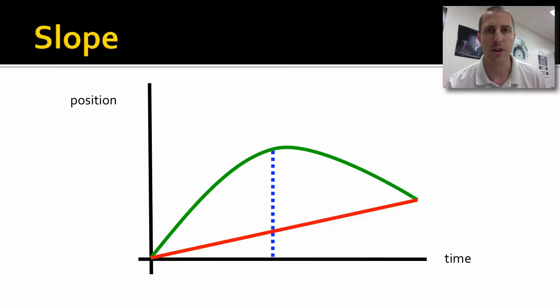We could pick two points on the curve and find the slope of that line, but that may not be exactly right. So let's pick two points that are closer to where we're looking. That could be closer. Let's pick two points that are even closer to the point we're looking for.